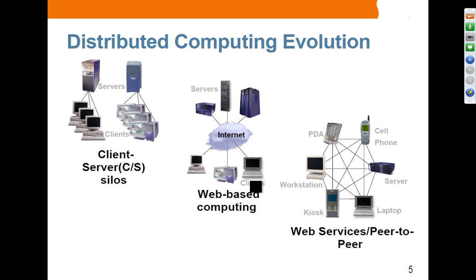Looking at the distributed computing evolution: in the beginning there was client-server technology — these are mostly silos, not really communicating with each other. Then we moved on to web-based computing, where clients talk to backend servers. The next evolution is web services and peer-to-peer computing, where a bunch of clients communicate with a bunch of servers through sending and receiving messages.